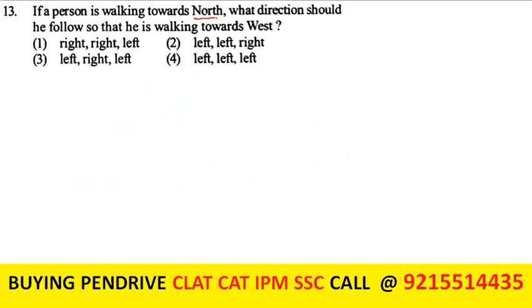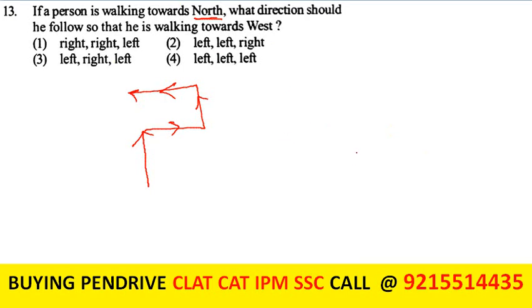If a person is walking towards north, in which sequence of turns should he follow to be walking towards west? Checking the options: first left, then right, then left again brings him to face west. So left, right, left is the correct sequence. The third option is my answer.